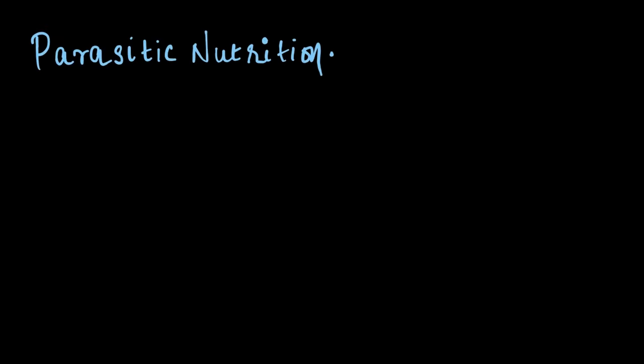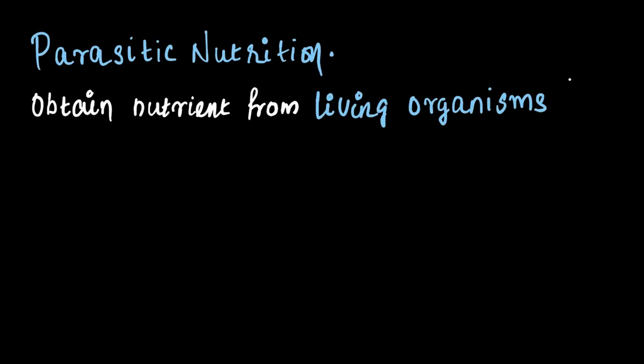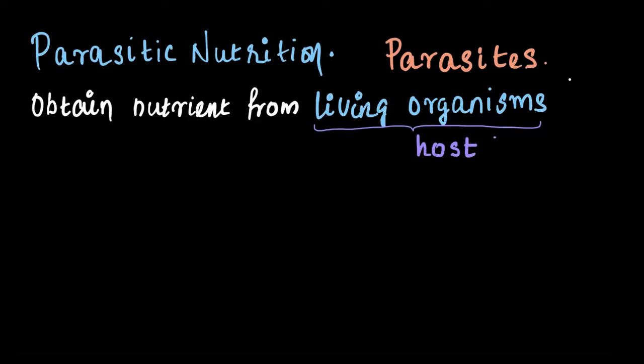Next, we have parasitic nutrition, where organisms obtain their nutrients from a living organism. This living organism is known as the host, and the ones that rely on them for nutrients are known as parasites. In this relationship, parasites benefit by getting nutrients, but the host doesn't get anything in return — no benefit at all.